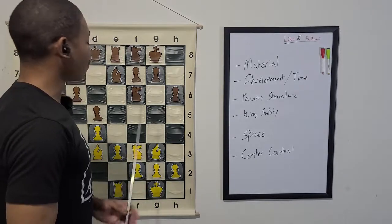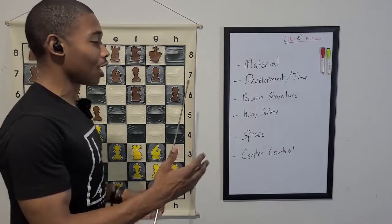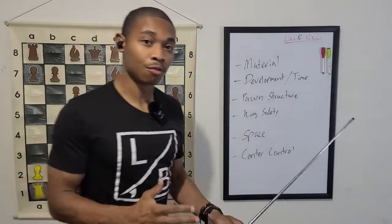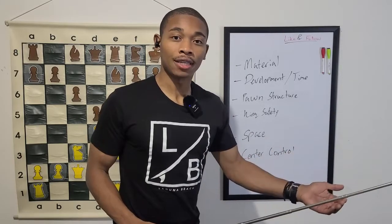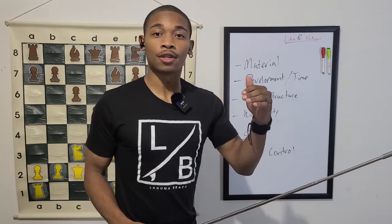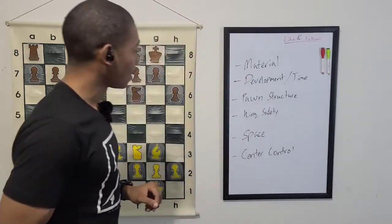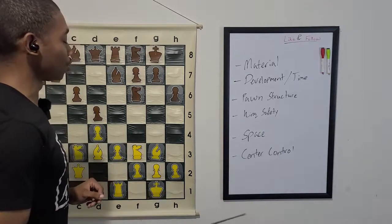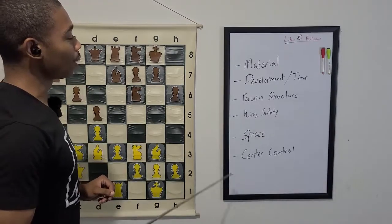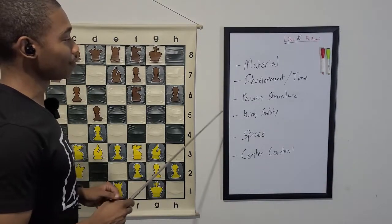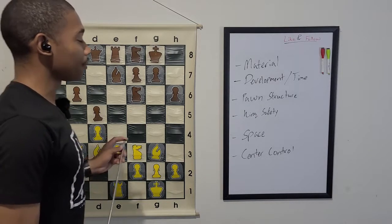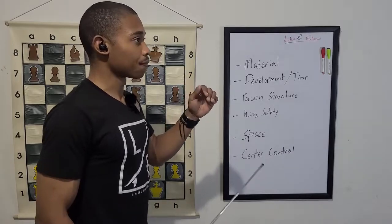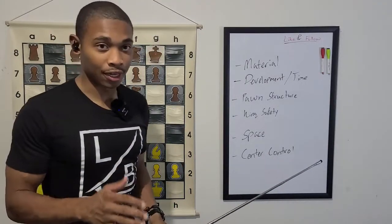Fifth, space. Whoever has more space has more options to attack both sides of the board. You want to be the person who has more space because you want to be the person who has a flexible position. And then sixth, we got center control. We can kind of do away with center control and king safety since those are kind of self-explanatory. But we can only do away with those if you're an advanced player.